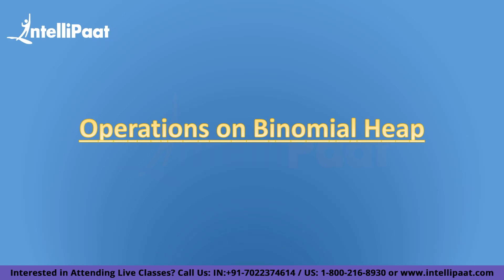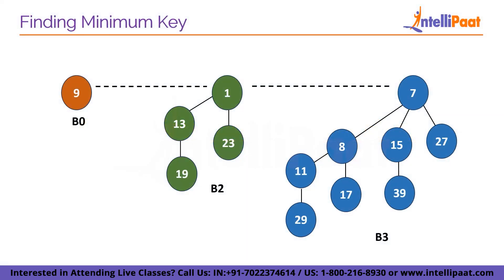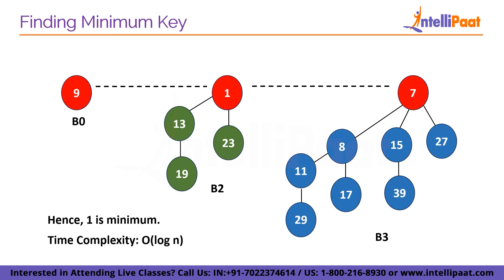Now we will look into the different operations that can be performed on a binomial heap. The first operation is finding the minimum key. Since a binomial heap is a collection of binomial trees and every binomial tree satisfies the min heap property, the root node contains the minimum value. Therefore, we only have to compare the root nodes of all binomial trees to find the minimum key. For example, with three binomial trees of degree 0, 2, and 3, we compare the roots: 9, 1, and 7. We can easily say that 1 is the minimum. The time complexity of finding the minimum key in a binomial heap is O(log n).